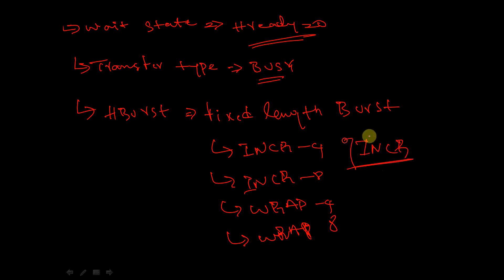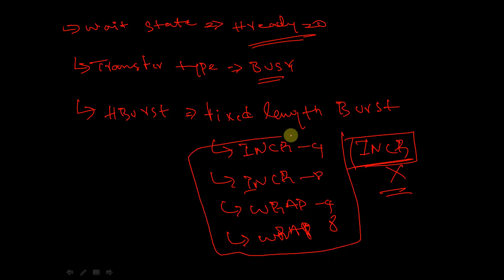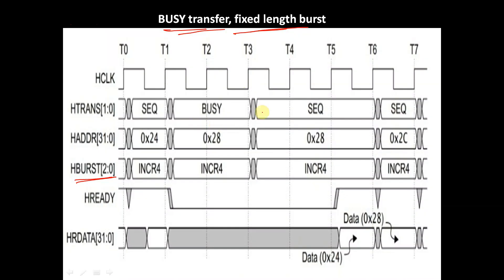If only INCR is mentioned, then it is not a fixed-length burst. So, only in case of a fixed-length burst, during a wait state, when the burst is a fixed-length burst and the transfer type is BUSY, then the master is allowed to change the transfer type from BUSY to SEQUENTIAL. And if it is changed to SEQUENTIAL, it must keep the transfer type constant until HREADY asserts to 1.